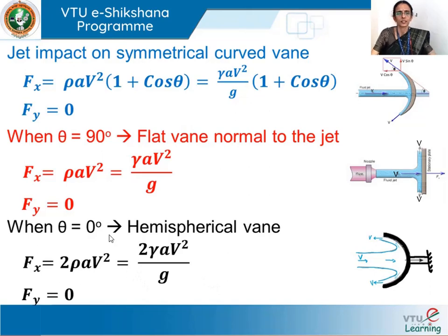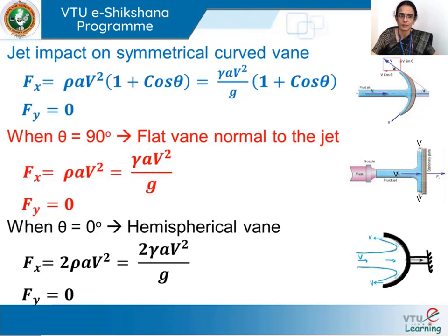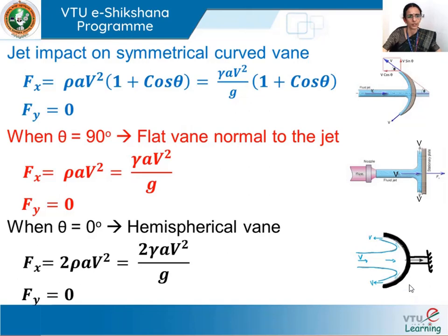The force exerted by a jet on a curved vane is always greater than on a flat vane, and is maximum when θ = 0 (hemispherical vane). However, in all these cases the vanes are stationary and not displaced. Therefore, the work done by the jet on the vane is zero. Whether in the x or y direction, stationary vanes produce zero work done.